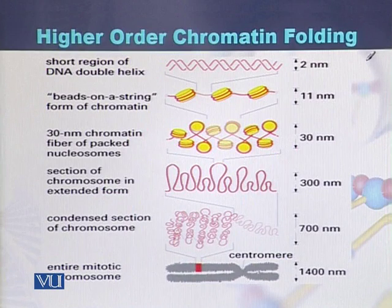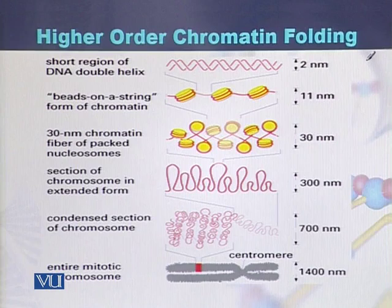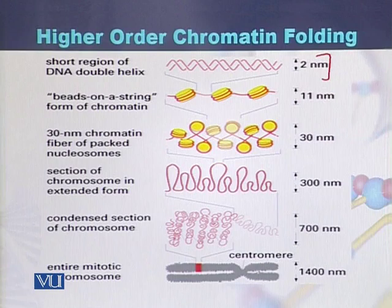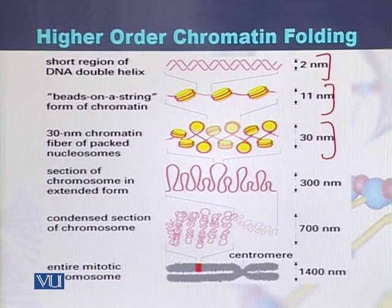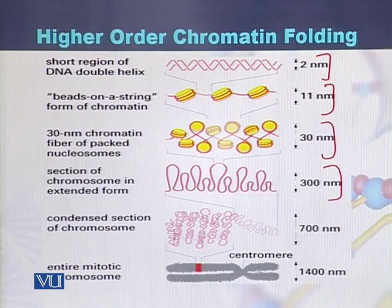Looking in detail at how DNA is converted into chromosomes, there are different levels of packaging. The first level is where the diameter of DNA is 2 nanometers and nucleosomes are formed. Then these nucleosomes are placed in the same vicinity and form a 30 nanometer diameter. Once packed together they form fibers, and these fibers form scaffolds which are 300 nanometers.